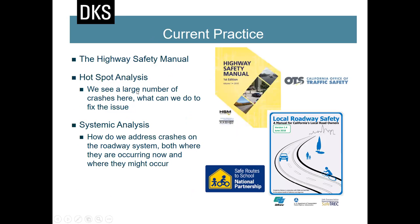Highway safety analysis can be done either as hotspot analysis — seeing a large number of crashes at a location and trying to fix that — or systemically. Especially for pedestrian crashes, hotspot analysis may not work. So we look at where crashes are happening now, identify risk factors, and then look system-wide for where similar crashes may be expected, even if they haven't occurred yet, addressing the whole system.